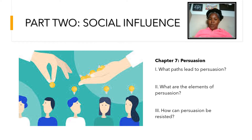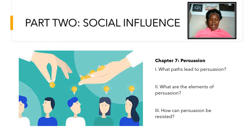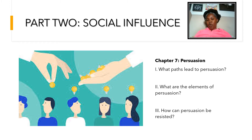Our topic for this week is persuasion — that's Chapter 7. Chapter 7 is broken into three sections. First, what path leads to persuasion — you're trying to identify the two paths and describe the type of cognitive processing each involves and its effects. Second, what are the elements of persuasion — you'll describe how factors affect the likelihood of taking a central or peripheral route. Third, how can persuasion be resisted — identifying tactics and ways to prepare people to resist unwanted persuasion.